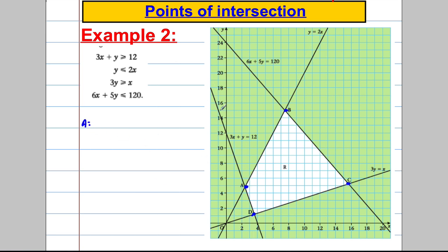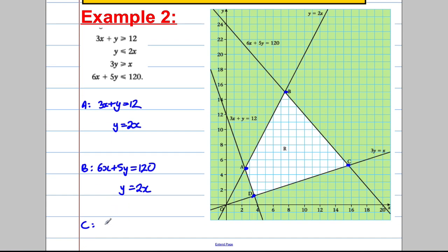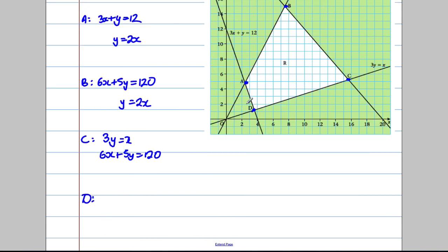So for A, the two equations we're solving, we're solving 3X plus Y is equal to 12 and that's Y equals 2X with that one. For B, we're solving 6X plus 5Y is equal to 120 and that's crossing Y equals 2X. For C, we're crossing 3Y equaling X with 6X plus 5Y is equal to 120 and for D, what are we doing? D is going to be 3Y is equal to X with 3X plus Y is equal to 12.